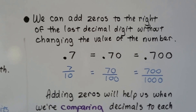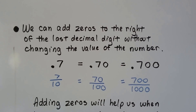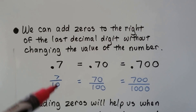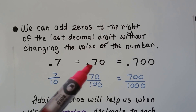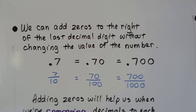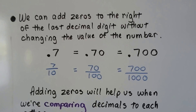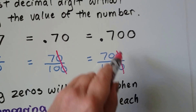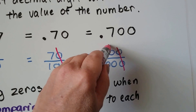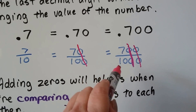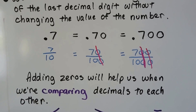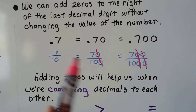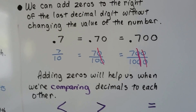We can add zeros to the right of the last decimal digit without changing the value of the number — we talked about this in the last video. If we have 7 tenths, it's the same thing as 70 hundredths or 700 thousandths. If we reduce these to their lowest terms, we can take the zeros off, and we can see we have 7 tenths, 7 tenths, 7 tenths. So it doesn't change the value, even though we read it as 70 hundredths or 700 thousandths. When we reduce them, it still comes back to 7 tenths.